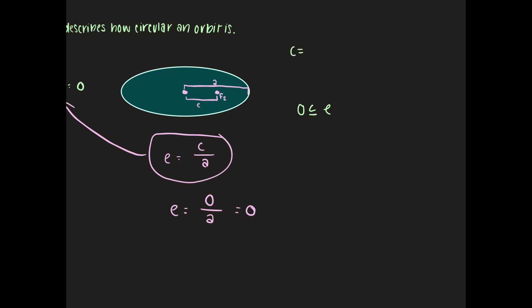But what is the higher end? The highest that c can be is a because our focus could be at the aphelion. So c can never be greater than a. This will never happen. So if c is equal to a and then our equation for eccentricity says the c has to be placed over a, this would be equal to one if c and a were equal. So that means the higher end of what our eccentricity can be is one.